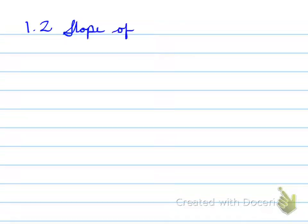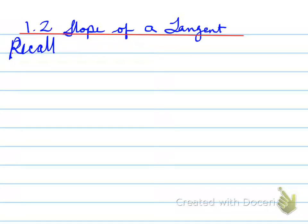All right, 1.2, slope of a tangent. What we're doing is we're going to be looking at different concepts that we learned in grade 12 and applying it to the calculus portion of this course.